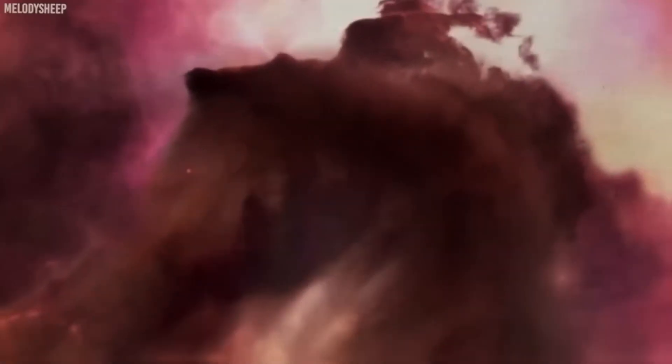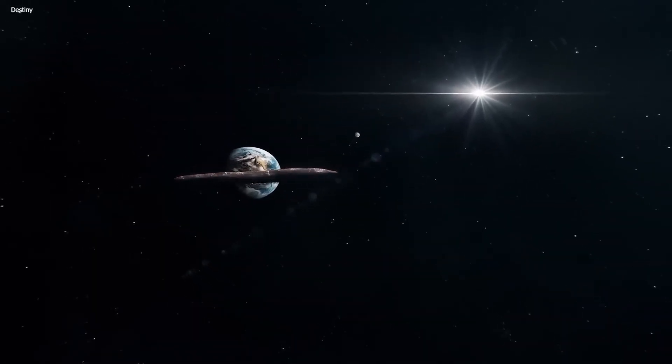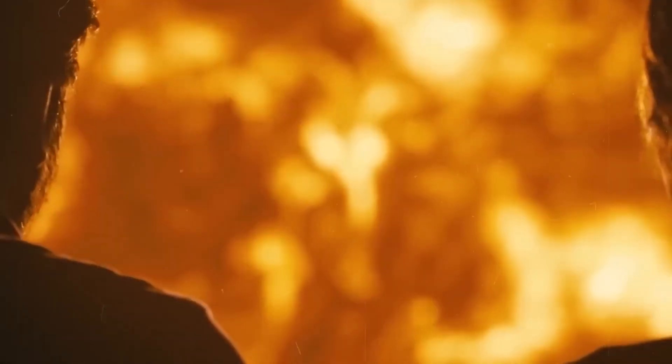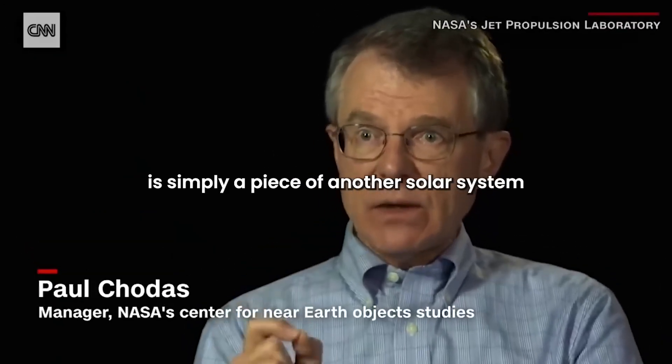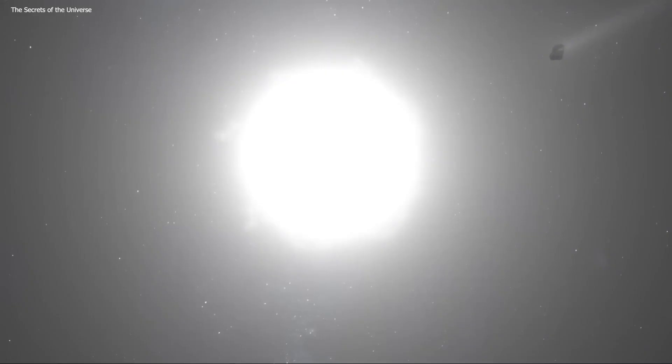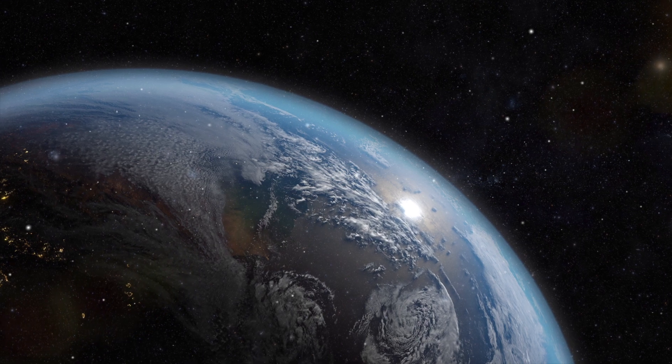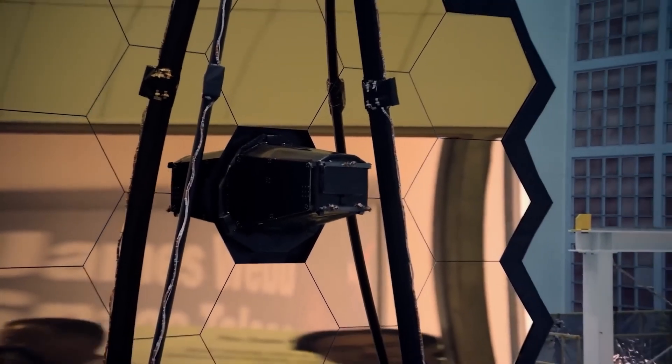Oumuamua, the extraordinary visitor from deep space, has captivated the world's attention in recent weeks. This object is simply a fragment from another solar system, expelled into the vastness of space. But it was the James Webb Telescope that unveiled the true image of this space giant, revealing unexpected and groundbreaking findings. Join us as we delve deeper into this image and explore how Oumuamua's discovery has revolutionized the realms of science and space exploration.